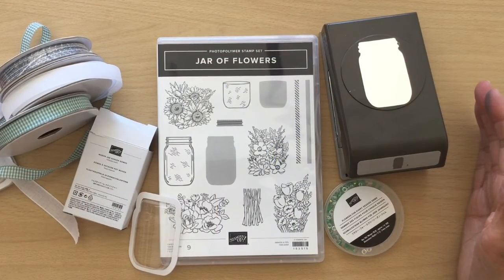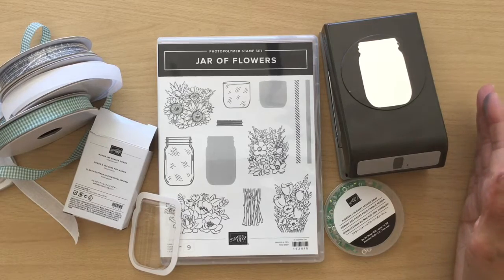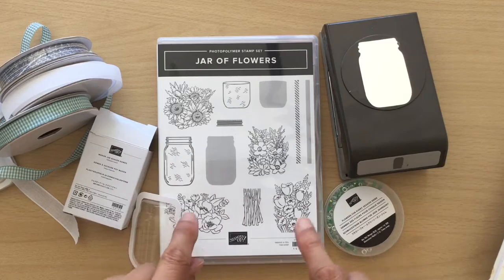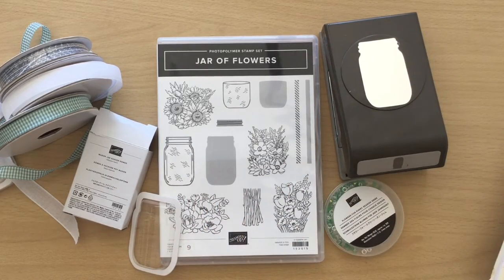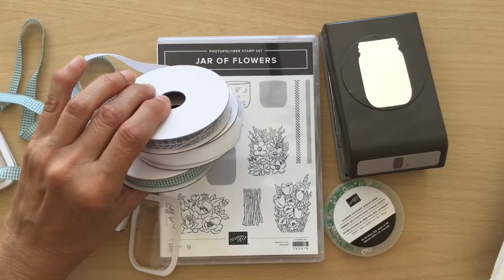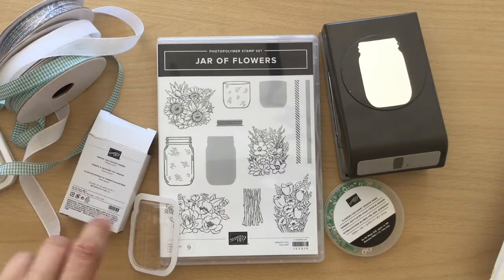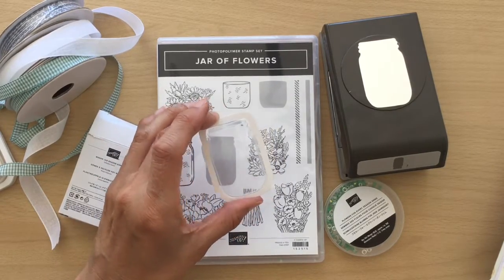Hello, my name is Linda. I'm a UK independent Stampin' Up demonstrator and I'm making an anniversary card today. I'm using the new Jar of Flowers bundle, so the stamp set and the punch, and also this really pretty Flowers for Every Season ribbon.